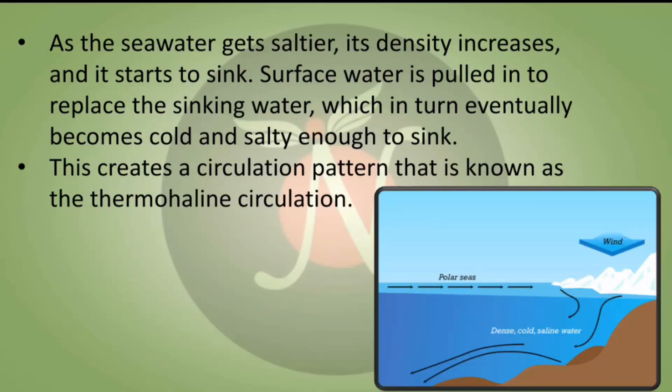As the sea water gets saltier, its density increases and it starts to sink down. The surface water is pulled in to replace the sinking water, which in turn eventually becomes cold and salty enough to sink again. This creates a circulation pattern known as thermohaline circulation. The dense water sinks and the surface water is pulled towards it, and this cycle goes on repeating. This is what deep ocean circulation is.